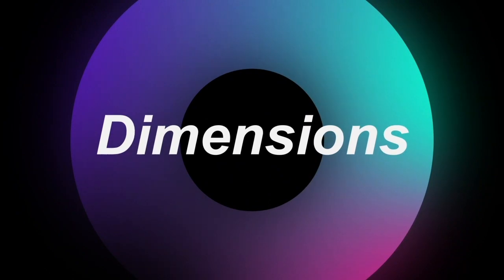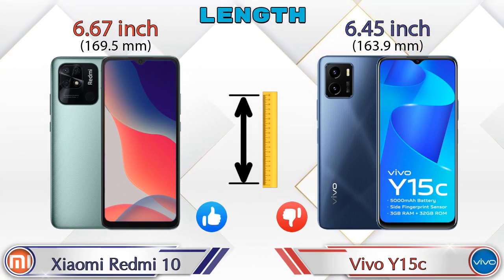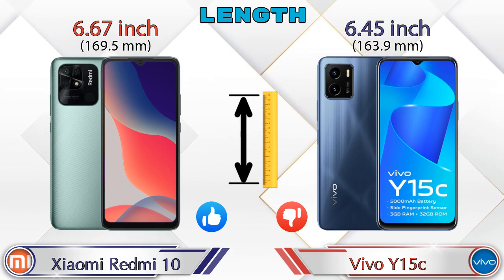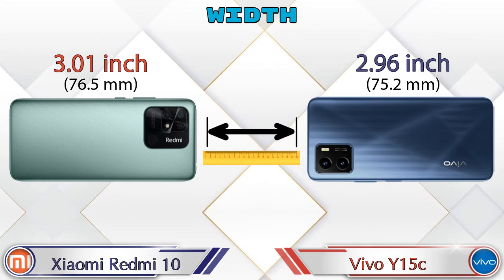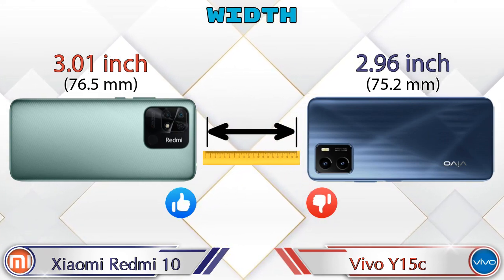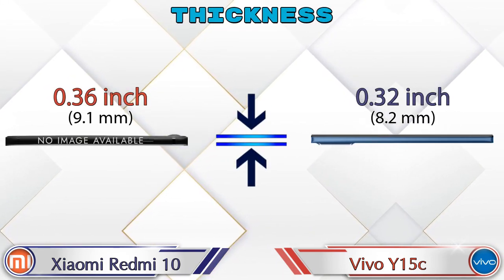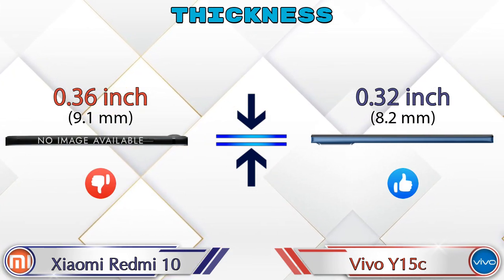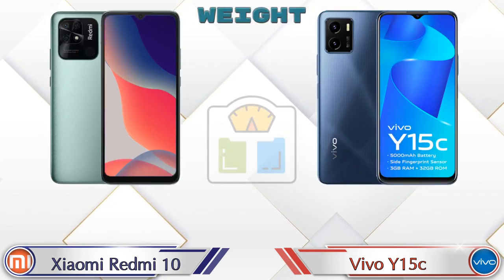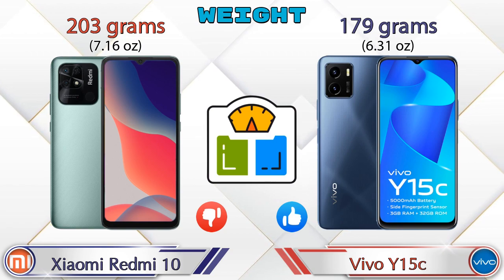Now let's check the details about dimensions. Talking about the length, Redmi 10 is 6.67 inches and Y15C is 6.45 inches, which is less than Redmi 10. Width: Redmi 10 is 3.01 inches and Y15C is 2.96 inches. Thickness: Redmi 10 is 0.36 inches and Y15C is 0.32 inches. Weight: Redmi 10 is 203 grams and Y15C is 179 grams.